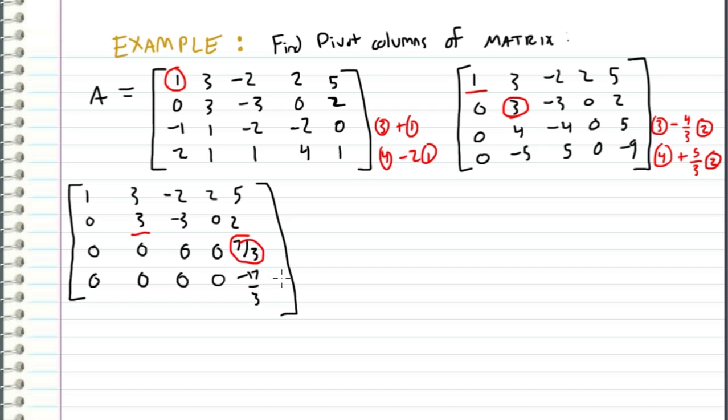And I will eliminate the negative seventeen thirds below it. The way I can do that is by taking row four and adding seventeen over seven times row three. And when I do this, we get the following matrix. And now we get zero, zero, zero, zero, and this operation cancels this last one out to zero.